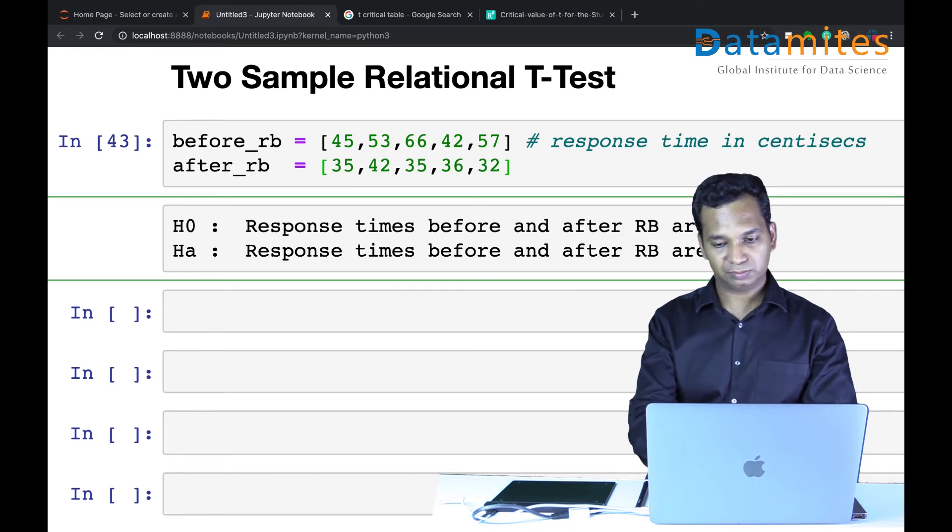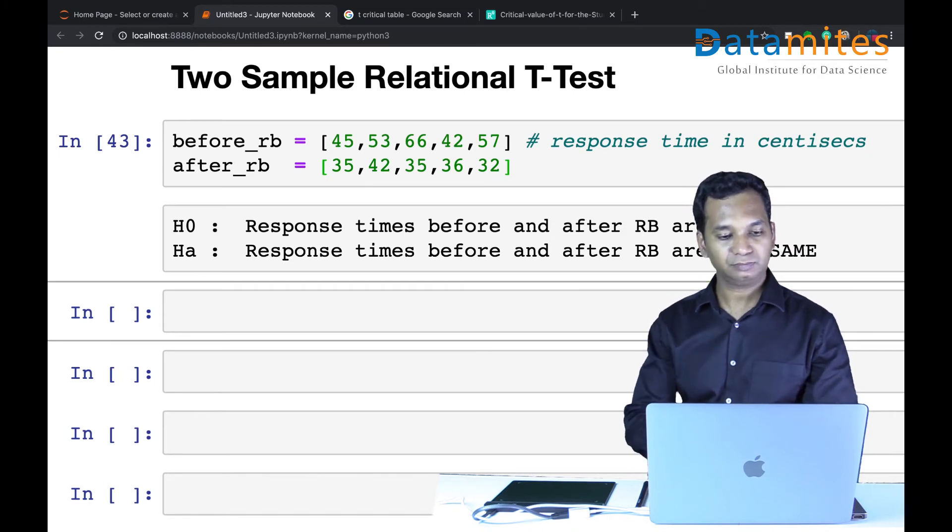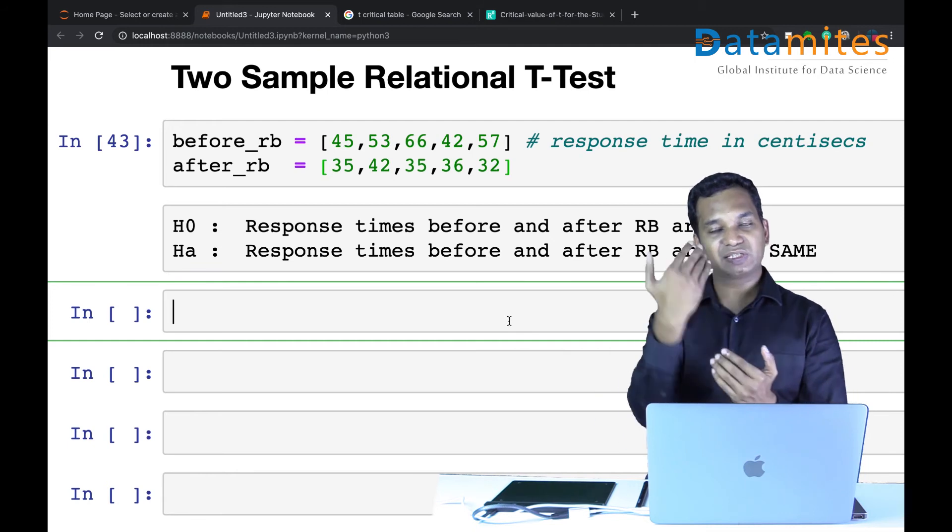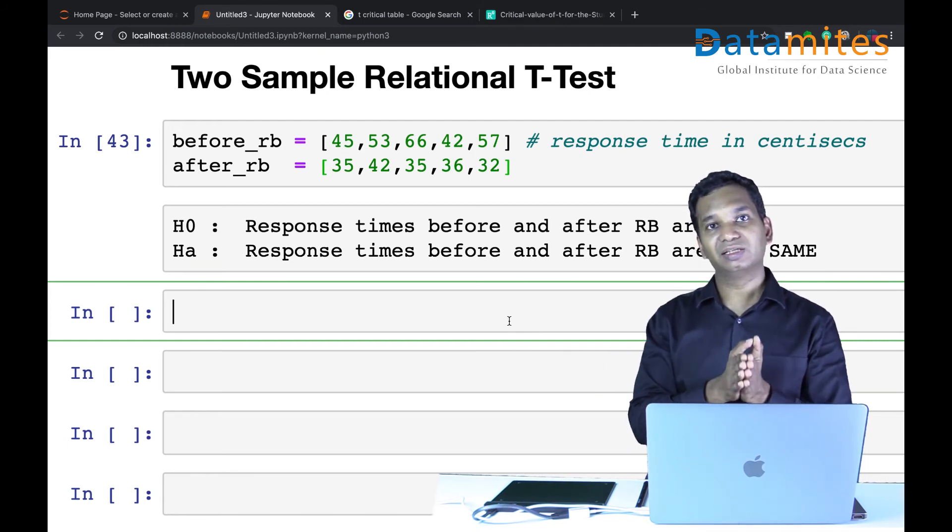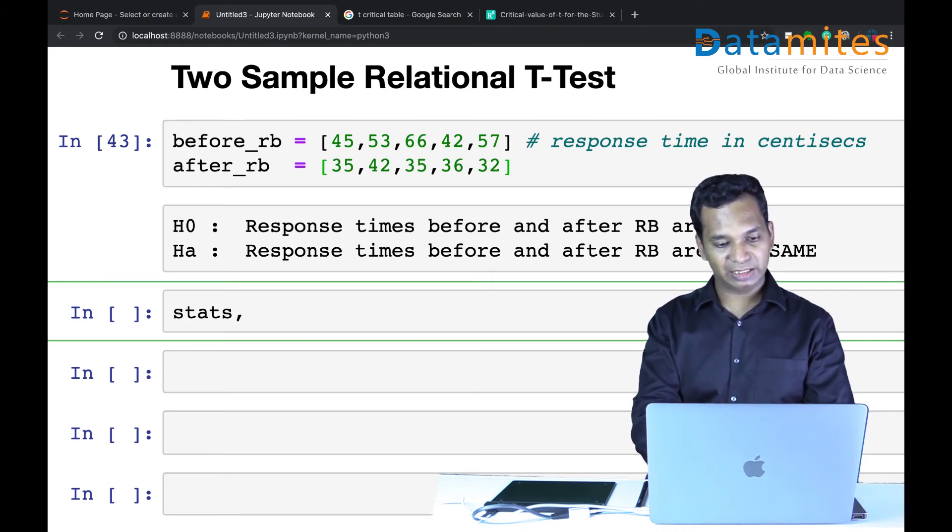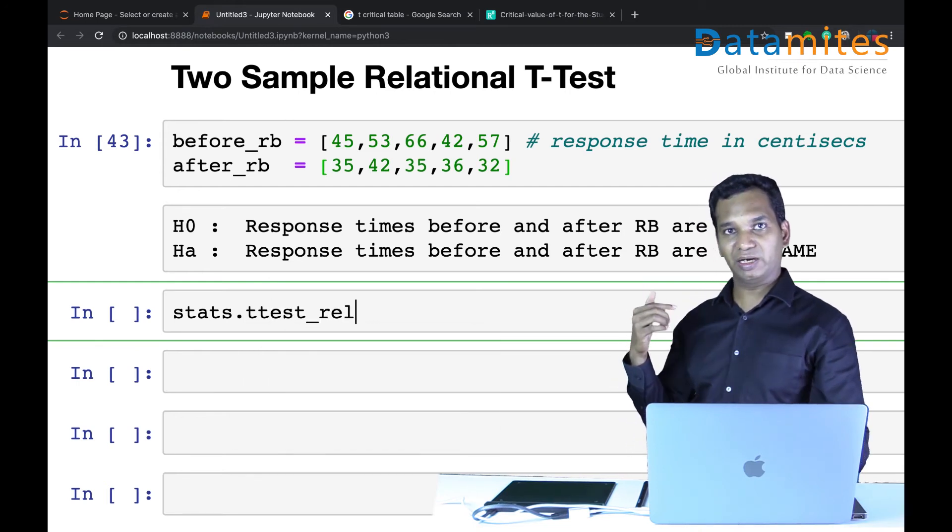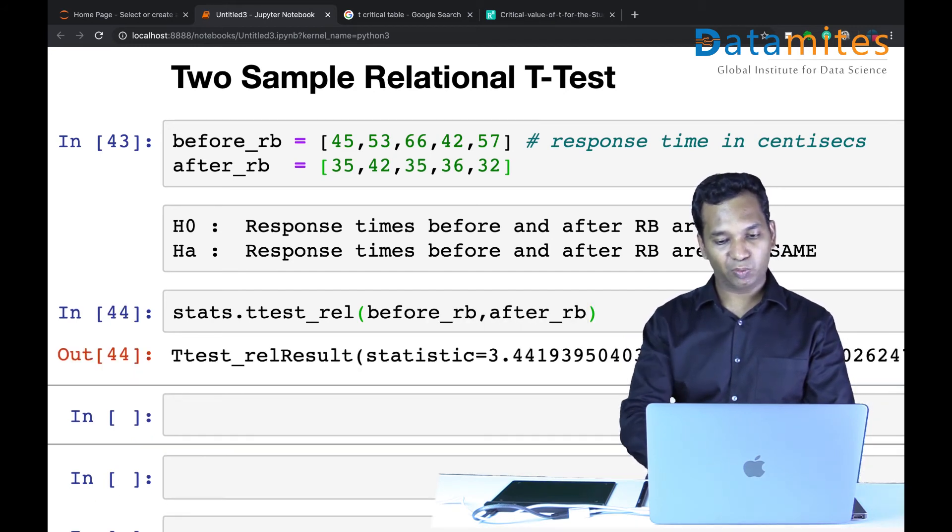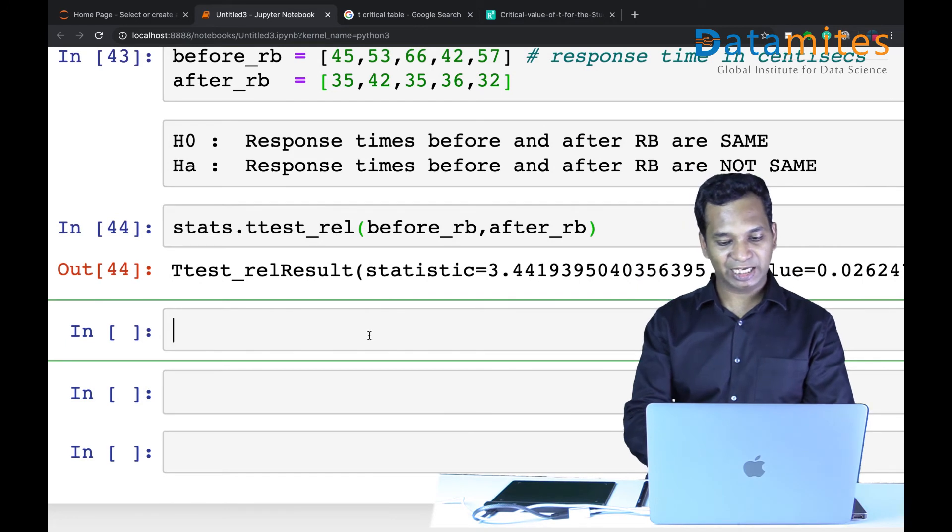Again, I'm generalizing it and making it easier for you to understand. There are different ways to interpret the hypothesis, but this is the standard way. Null hypothesis and alternate hypothesis are fixed. Now I'm going to run ttest relational. It's in the stats package: stats.ttest_rel, relational. Before Red Bull and after Red Bull.